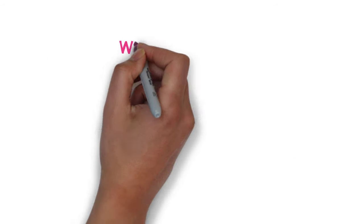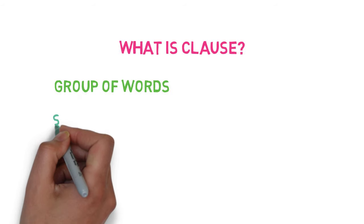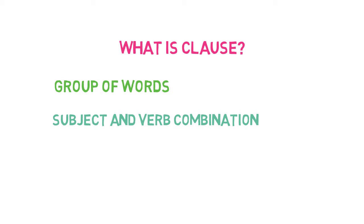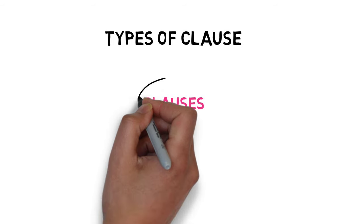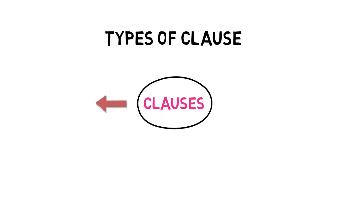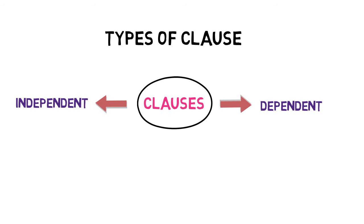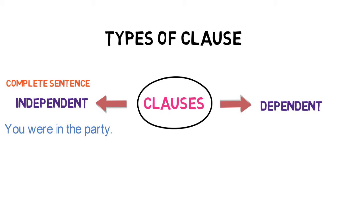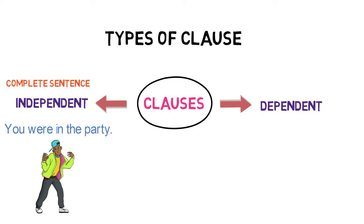Now let's look at clauses. What is a clause? A clause is a group of words with a subject and a verb combination, and it has a complete meaning by itself. Clauses are mainly divided into two parts based on their usage — they may be an independent clause or a dependent clause. An independent clause is actually a complete sentence. For example, 'you were in the party' is a complete sentence and it doesn't depend on any other sentence to make it complete.